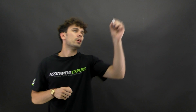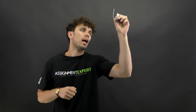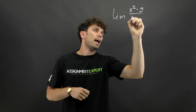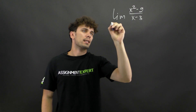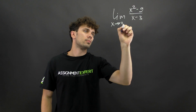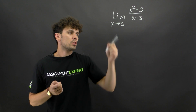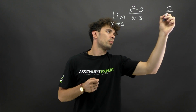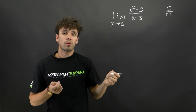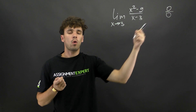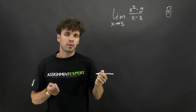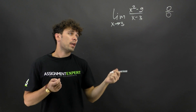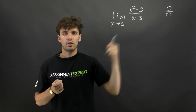For example, let's take the limit of x squared minus 9 over x minus 3 as x tends to 3. If we substitute 3 into our limit we will get 0 over 0. That's a problem because we don't know what 0 over 0 is — it's an indeterminate form. Therefore we need another way to answer this, and for that we need to factor the function under the limit sign.